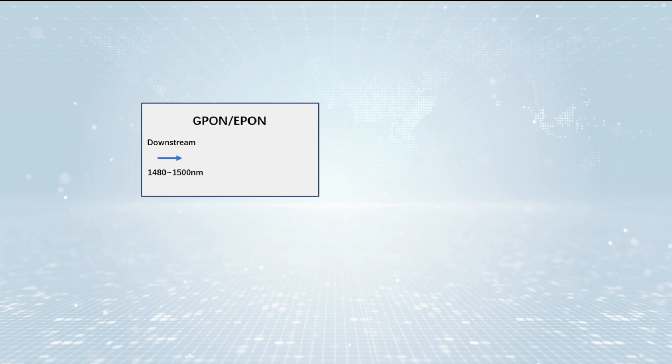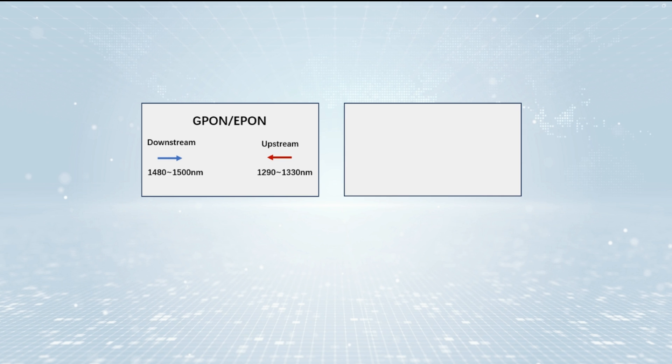GPON is also commonly used for FTTH networks. XGS-PON supports speeds of 10 gigabits per second downstream and 2.5 gigabits per second upstream, with wavelengths of 1,577 nm and 1,270 nm respectively.